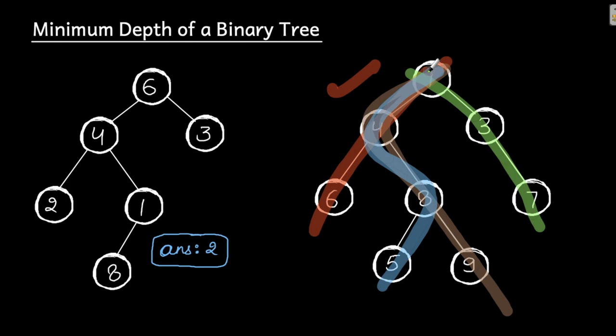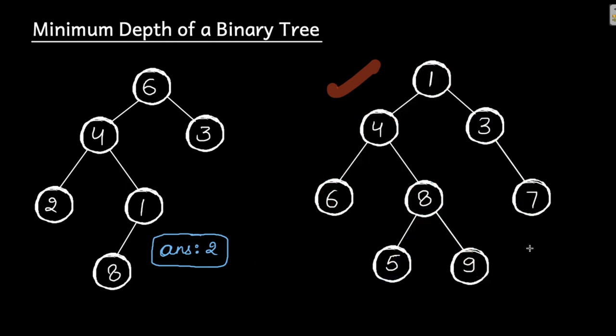Now, whichever is the minimum path — minimum depth means the number of nodes along the shortest path from root to leaf. Looking at the red path and the green path, whichever has the minimum number of nodes is the shortest path. The answer for this test case is going to be three.